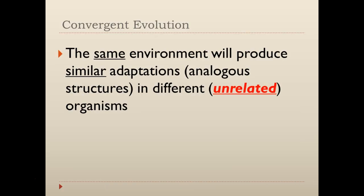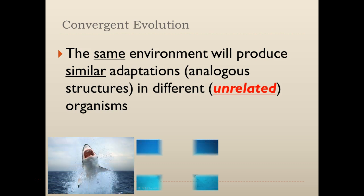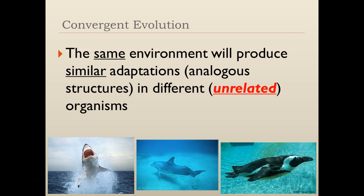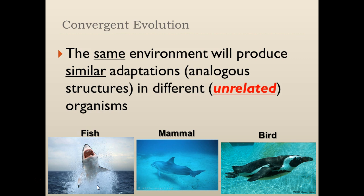This is called convergent evolution, where the same environment produces similar adaptations in different organisms — called analogous structures. Here a shark, a dolphin, and a penguin all have the same general structure: they're streamlined and pointy with some method of propulsion at one end. Even though one's a fish, one's a mammal, and one's a bird, they've gotten to the same idea — streamlined propulsion — through very different ways.